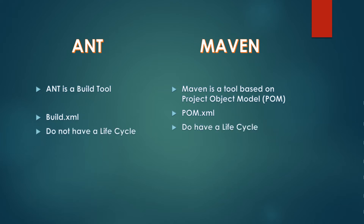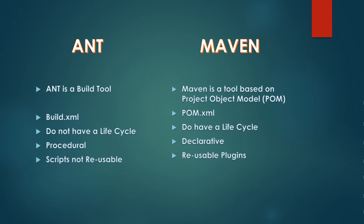Ant does not have a life cycle, but Maven does have a life cycle. Ant follows a procedural methodology, which means you have to specifically order what needs to be done, whereas Maven is declarative — Maven takes care of everything based on the pom.xml. The scripts written for Ant are not reusable, but Maven gives reusability for plugins.